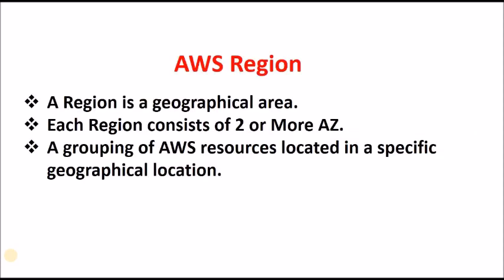An AWS region is nothing but a geographical location. At present we have 18 regions where AWS is serving their end customers. Each region has two or more availability zones. Availability zones are nothing but data centers — a grouping of AWS resources located in a specific geographical location is called a region.